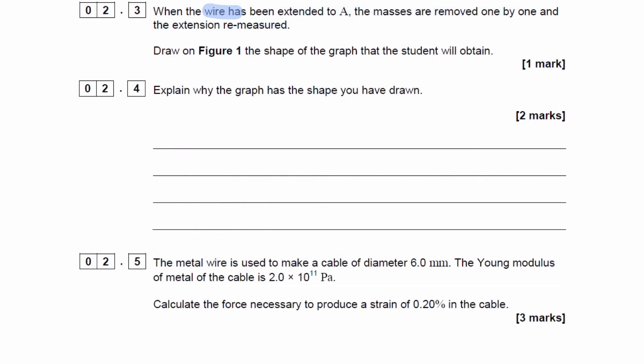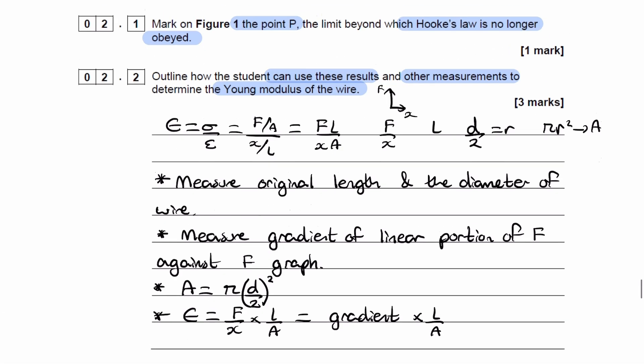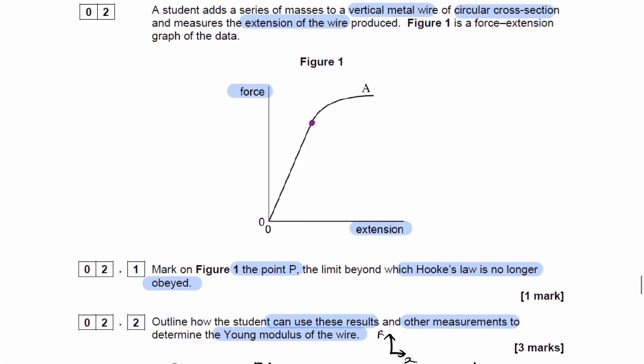When the wire has been extended to point A, the masses are removed one by one and the extension re-measured. Draw on Figure 1 the shape of the graph the student will obtain. So we're extending the graph to point A. Point A is at the end, as we see here.